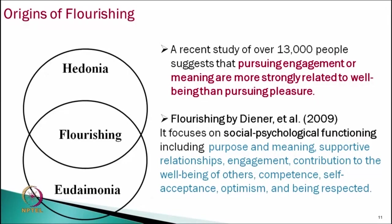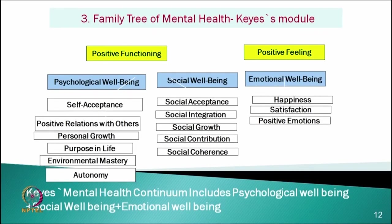A recent study of over 13,000 people suggests that pursuing engagement or meaning is more strongly related to well-being than pursuing pleasure. That is why combining both views gives a better understanding of flourishing. Another theory on mental health was proposed by Keyes. His model includes psychological well-being, emotional well-being (or subjective well-being), and his own original model — social well-being — and by combining all three, he defines mental health level.